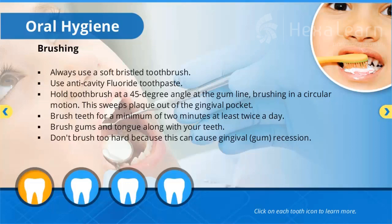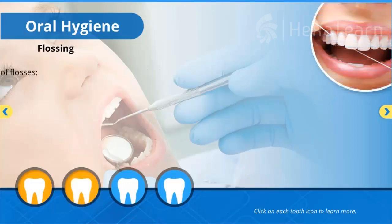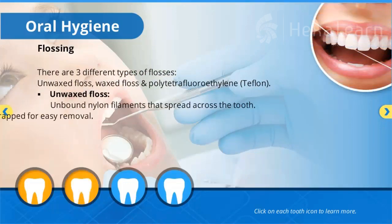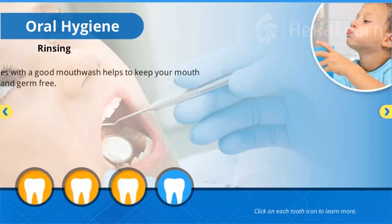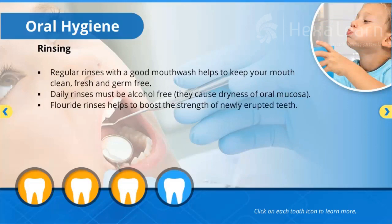Brush gums and tongue along with your teeth. Don't brush too hard because this can cause gingival gum recession. Flossing: there are three different types of floss — unwaxed floss, waxed floss, and polytetrafluoroethylene (PTFE) floss. Unwaxed floss consists of unbound nylon filaments that spread across the tooth so plaque and debris get trapped for easy removal. Waxed floss is less susceptible to tearing or shredding when used between tight contacts or areas with overhanging restorations. PTFE floss slides easily through tight contacts and does not fray.